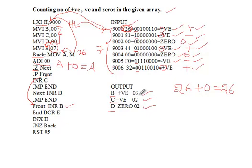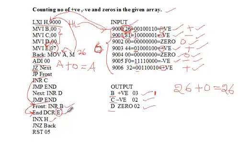At label FRONT, we increment B — the positive counter. Initially B was 00; now it is incremented to 01. Then JUMP END unconditionally jumps to the END label. At END, we decrement E (the counter, now 06), increment the HL pair (moving from 9000 to 9001), and JNZ BACK — as long as E is not zero, we jump back to BACK to process the next element.